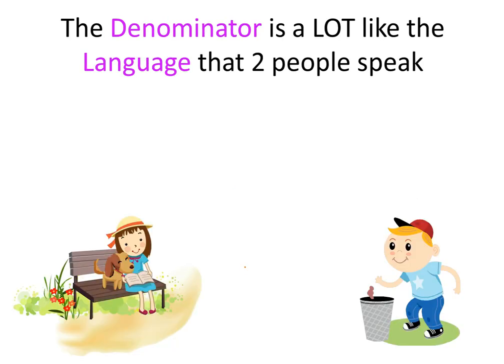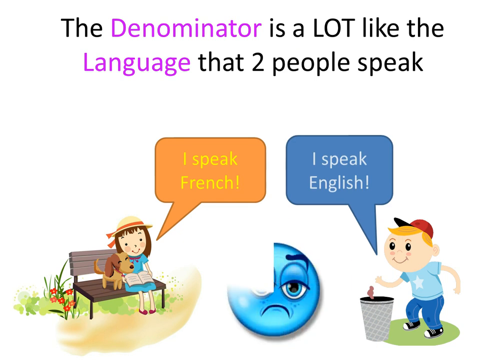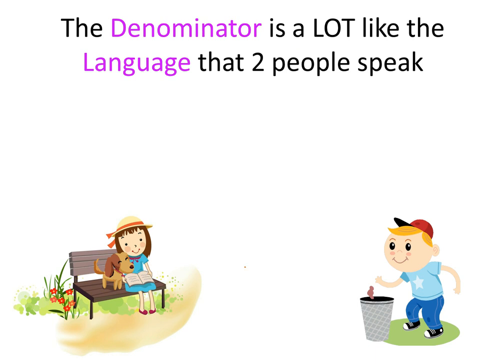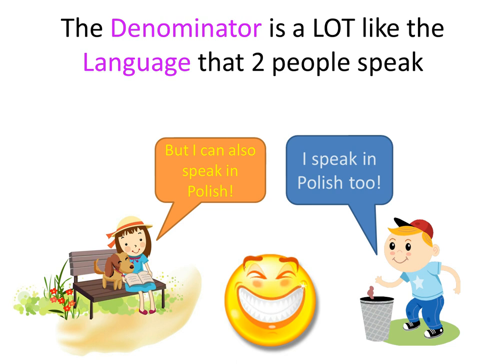The denominator is a lot like the language that two people speak. This girl says she speaks French, and the boy says he speaks English. Unfortunately, that makes it rather tough for the two to communicate. However, if the girl can speak Polish and the boy can speak Polish as well, they switch to Polish, and then they can communicate and understand each other.